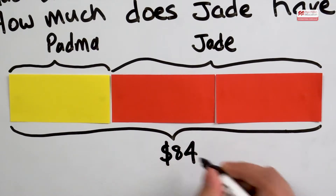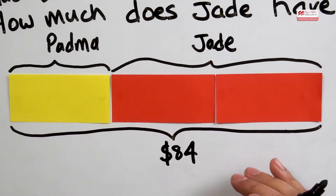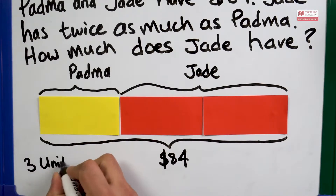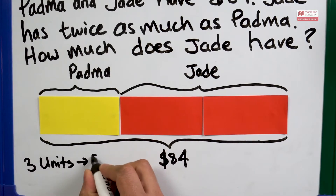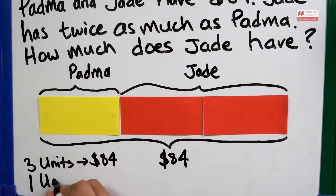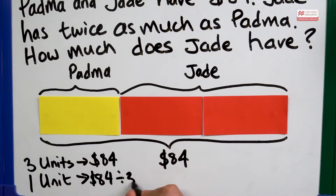We can see that $84 represents three equal parts. So three units is $84. So one unit will be $84 divided by three, which is $28.